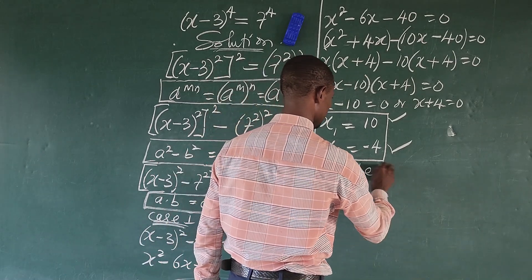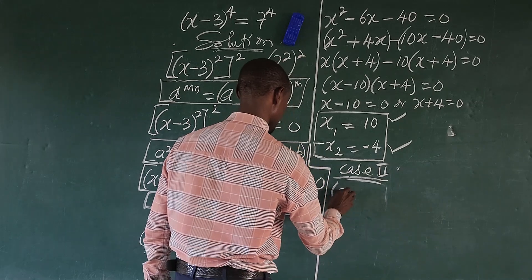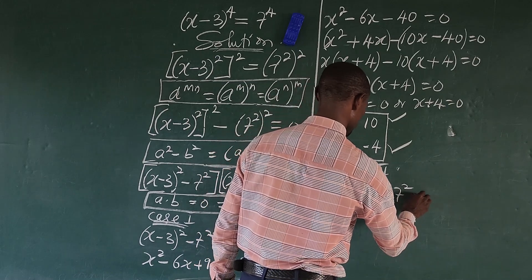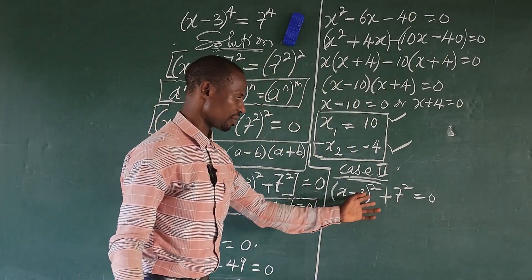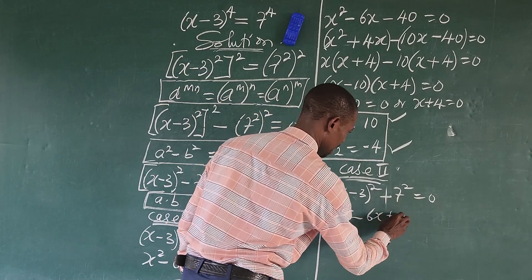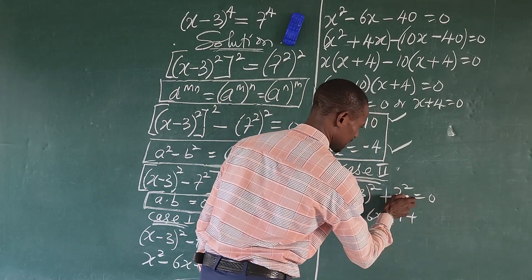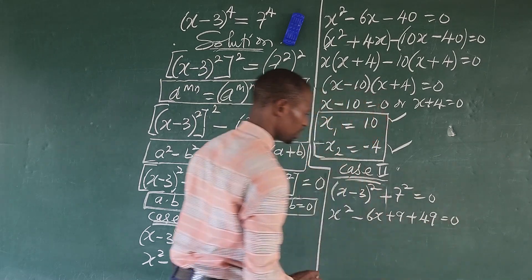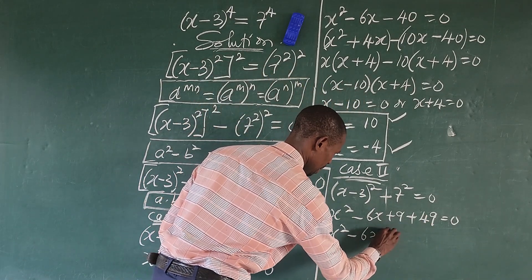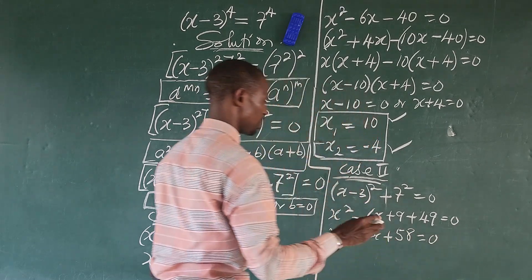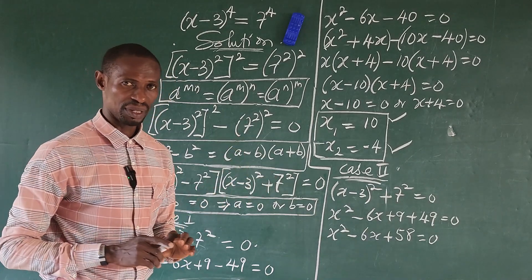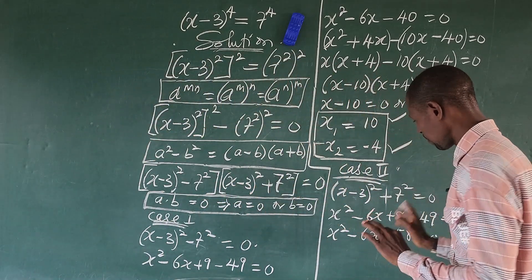For Case 2, we take the other factor — the sum part. So Case 2 is: bracket x minus 3, all to the power of 2, plus 7 to the power of 2, equal to zero. We open up this bracket. So opening it up: x to the power of 2, minus 6x, plus 9, plus 7 to the power of 2, which gives us 49, all equal to zero. We cannot use the factorization method here, so we want to use the formula method.